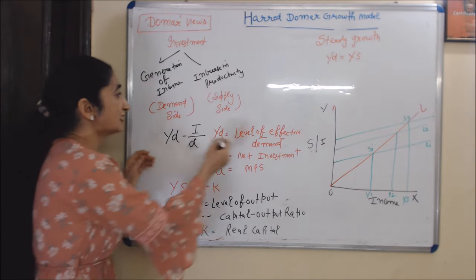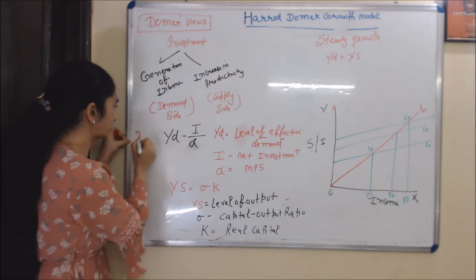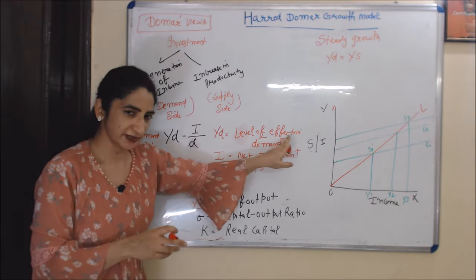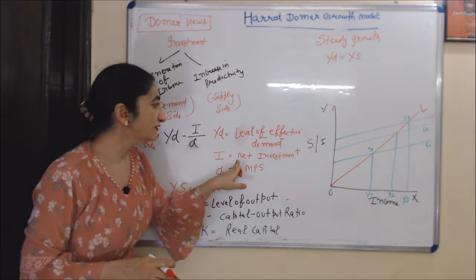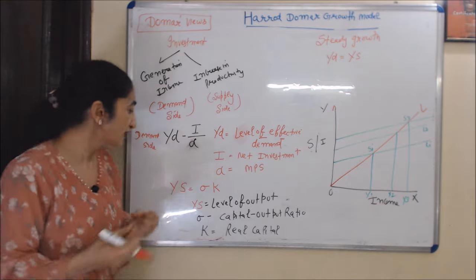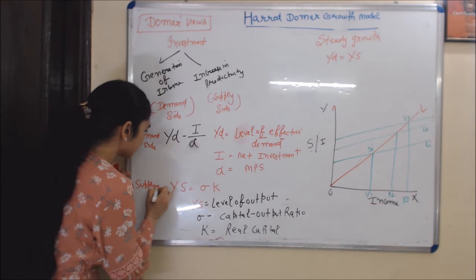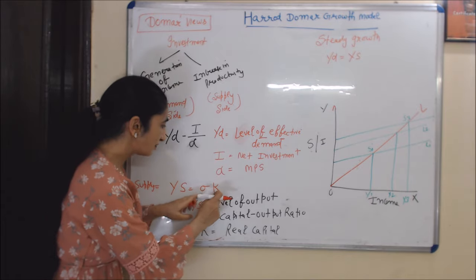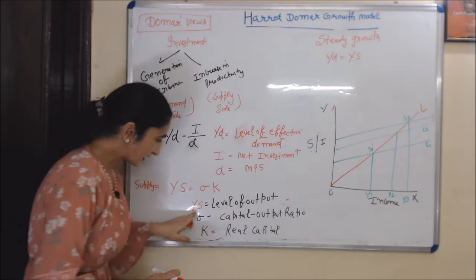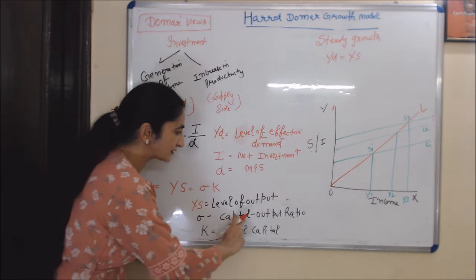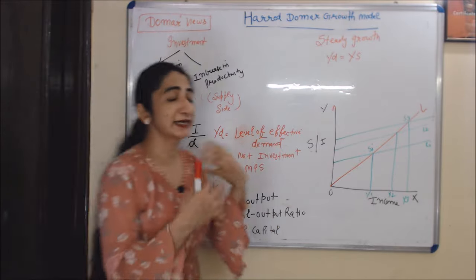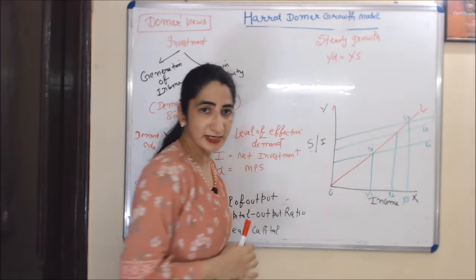The demand-side equation is YD equals I over alpha, where YD is the level of effective demand, I is the level of net investment, and alpha is the marginal propensity to save (MPS). The supply-side equation is YS equals sigma multiplied by K, where YS is the level of output, sigma is the capital-output ratio, and K is real capital.